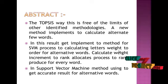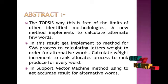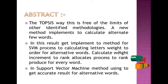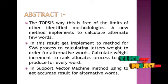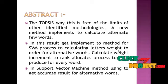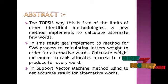The alternate few words approach gets synonymous answers to derive results. Also, four companies are evaluated to get the best result by calculating alternate next company results. The SVM process is used to calculate the letter weight for alternative words. Calculating weight increases the rank allocation process, producing a rank for every word. The support vector machine method uses accurate results for alternate words, getting alternate weights and results for every synonymous word for every user.